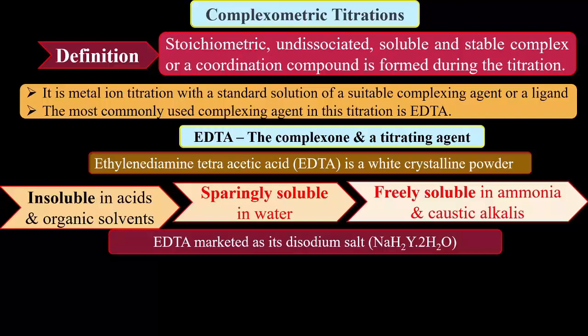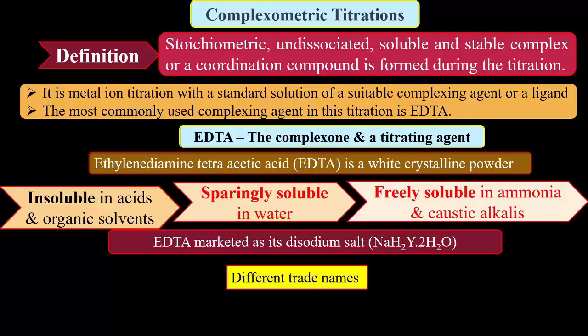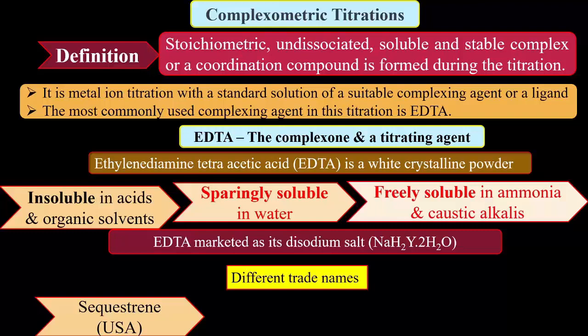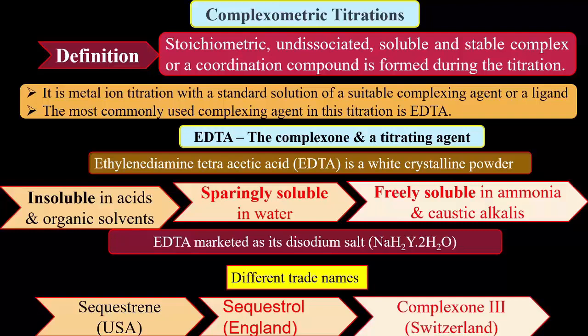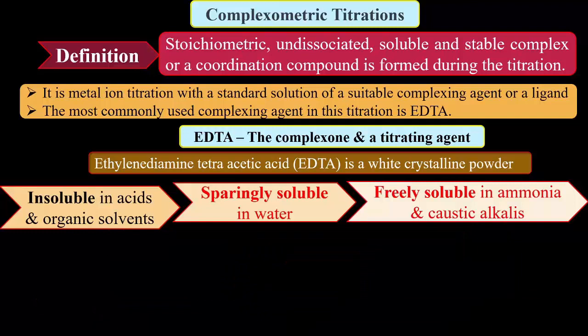While freely soluble in ammonia and caustic alkalis. So this EDTA is marketed as its disodium salt. It is marketed under different trade names: Sequestrine in USA, Sequestral in England, Complexone III in Switzerland. In India, the name used is simply ethylene diamine tetraacetic acid (disodium salt). This solubility indicates that EDTA is acidic and also polar in nature.